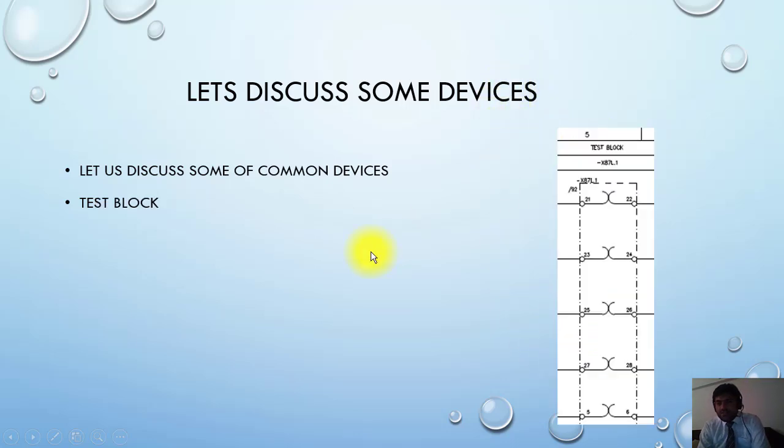Next is the symbol for test block. This is named as 87X87L.1. 87 that we have seen is for differential. So this is test block for differential relay. What is the function? Just a brief information - you have to insert plug here. The plug will isolate 21, 22, and these points, and then you can inject different quantities in the relay to simulate fault.